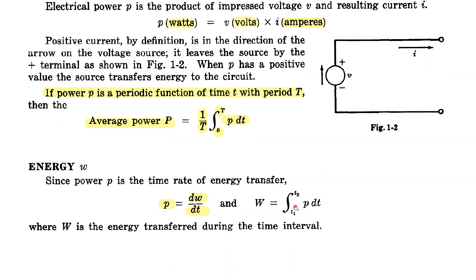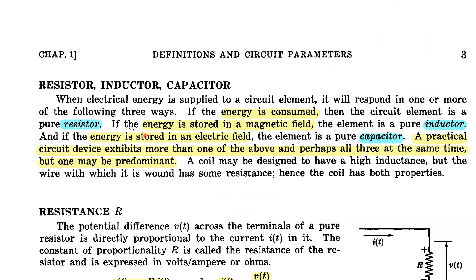Power multiplied by time gives work, which can be expressed in differential form or integral form — current times power times time. Energy is related to the resistor, inductor, and capacitor. The resistor consumes electrical energy, the inductor stores energy in a magnetic field, and the capacitor stores electrical energy in an electric field.